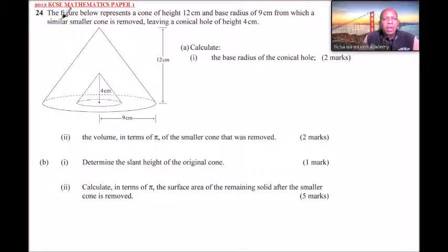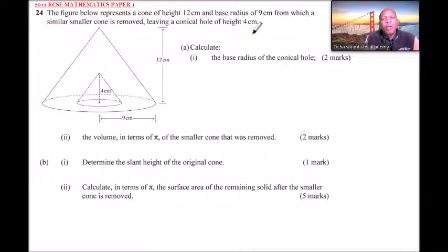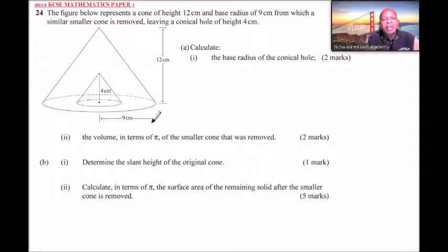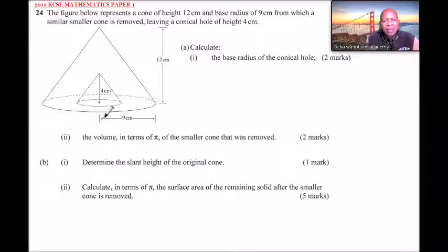Question number 24. The figure below represents a cone of height 12 centimeters and a base of 9 centimeters, from which a smaller similar cone is removed, leaving a conical hole of height 4 centimeters. Calculate: Roman numeral one, the base radius of the conical hole — that is, the radius of the base of the small cone. Roman numeral two, the volume in terms of pi of the smaller cone that was removed.